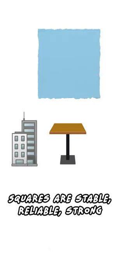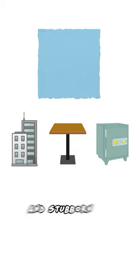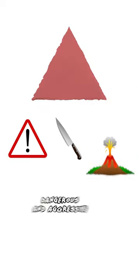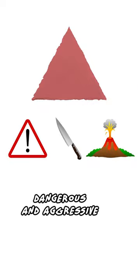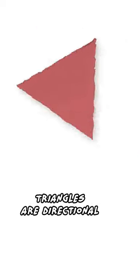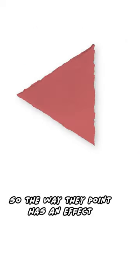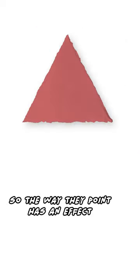Squares are stable, reliable, strong, and stubborn. Triangles are energetic, dangerous, and aggressive. Triangles are directional, so the way they point has an effect.